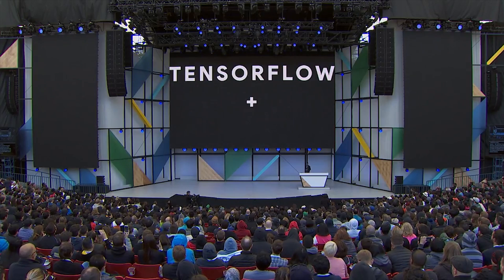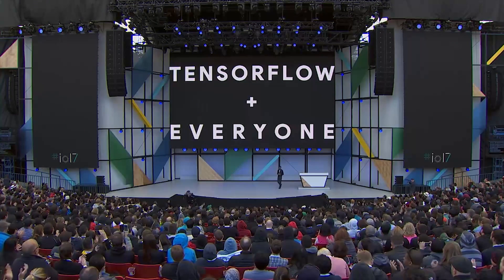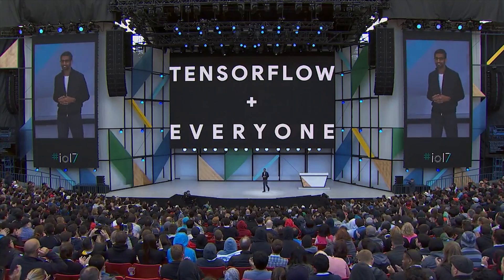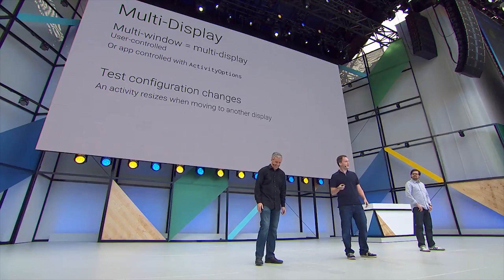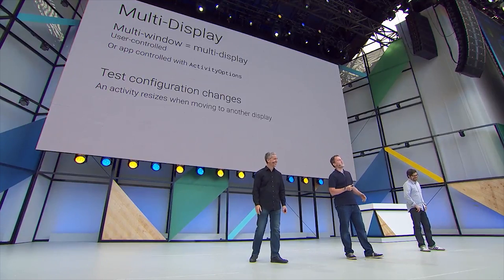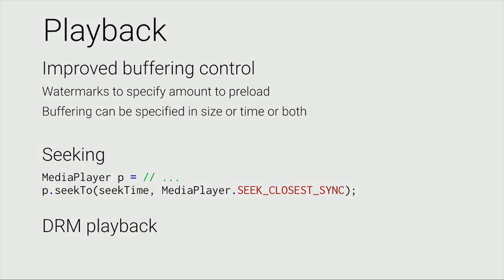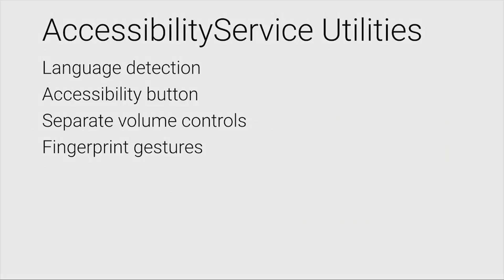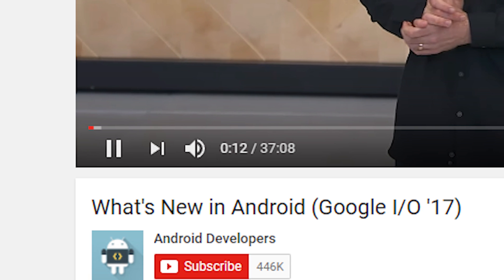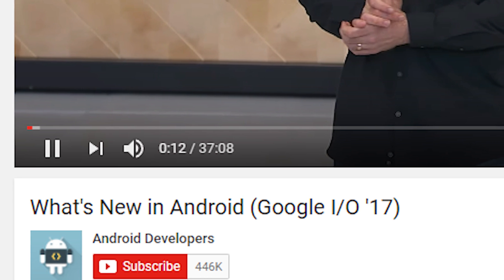Most of the other announcements were focused on app development. TensorFlow Lite will allow developers to play with machine learning a little bit easier. There were more talks about how developers can add their own font packs to their applications as well. There was a second talk after the keynote that talked a lot about the new APIs that help with things like multi-display support, new media playback code, new media recording code, text auto-sizing improvements, new accessibility options, and far too many more to list here. App developers are going to have a lot to play with very soon.